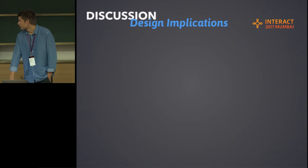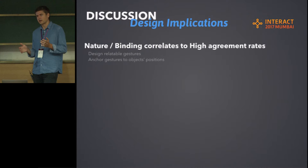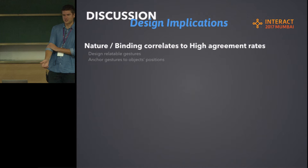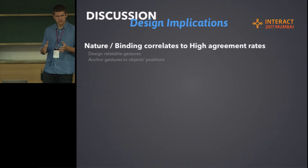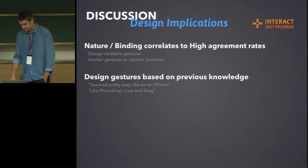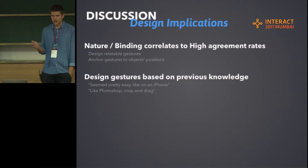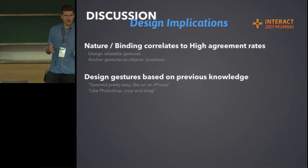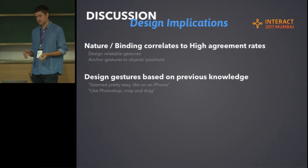Here are our design implications. We found that the nature and binding categories in the taxonomy correlated with high agreement rates. This means you should design gestures that people have a mental model for — object-centric gestures that relate to how we would interact physically. You should also consider designing gestures based on how people use similar applications in the same field — if your application resembles something else, look into how gestures work in that area.